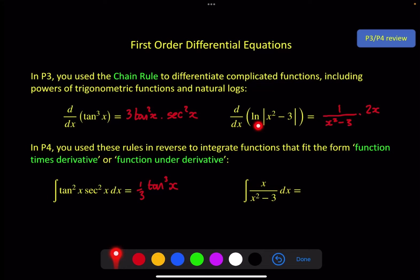So this will equal a half, natural log x squared minus 3.